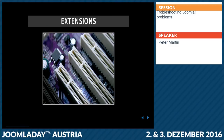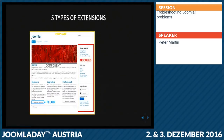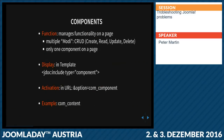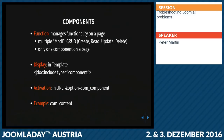Extensions in general: there are five types — components, modules, plugins, templates, and language files. If you have to look into problems with components, check the URL structure, because you can see which component is running there — it will say something like option=com_content. It will be displayed in the template at the position where it says include component.